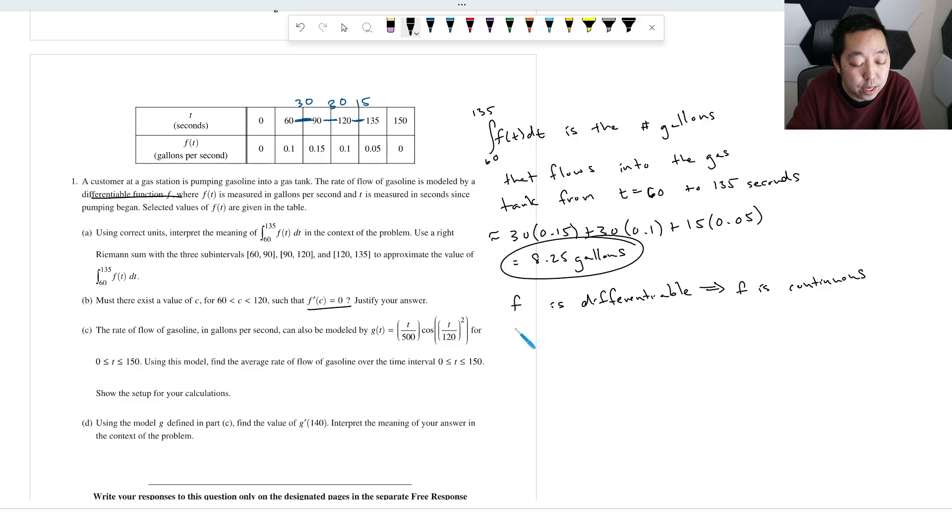And then we would say F(120) minus F(60) over 120 minus 60 is going to be 0.1 minus 0.1 over 60, which is going to be 0. And then you would say by the mean value theorem, there exists a C such that C is between 60 and 120, and F prime of C is going to equal 0. So you want to do this calculation, and you want to show that that's equal. You also want to establish the conditions, and you want to invoke the name there.